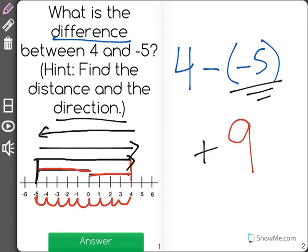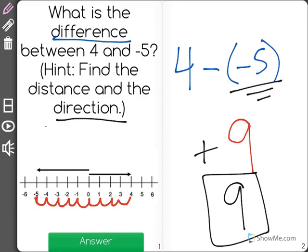So our correct answer is positive 9, which we just write as the number 9. Again, find your distance first and then determine your direction based on starting with the second number and going towards the first.